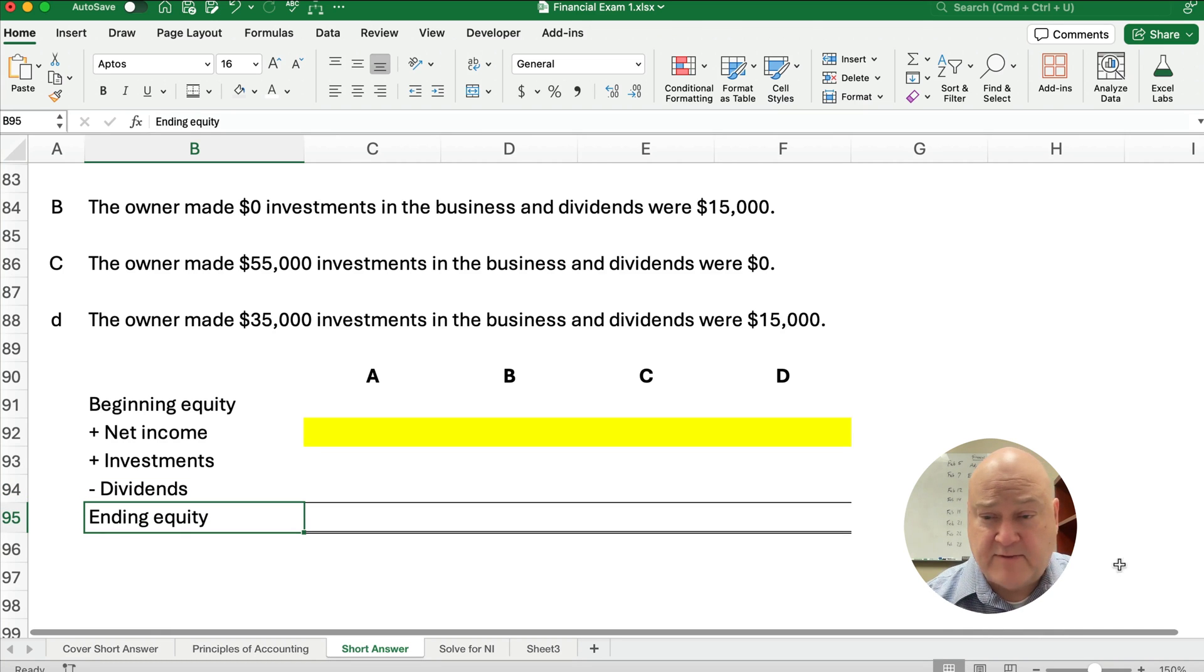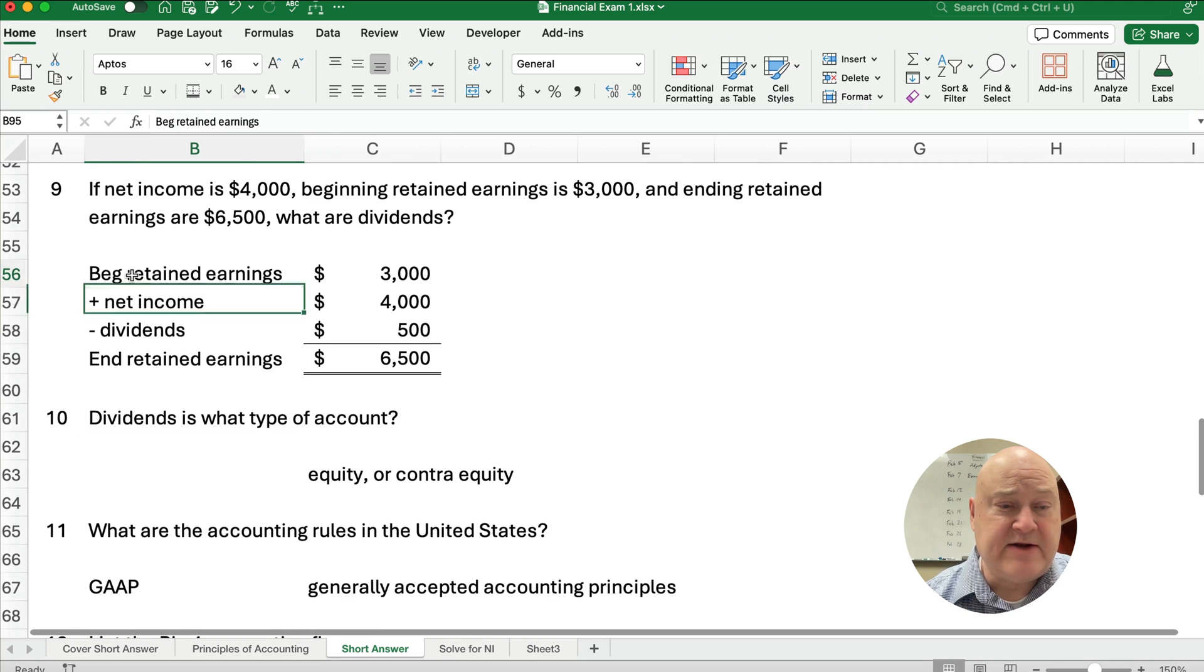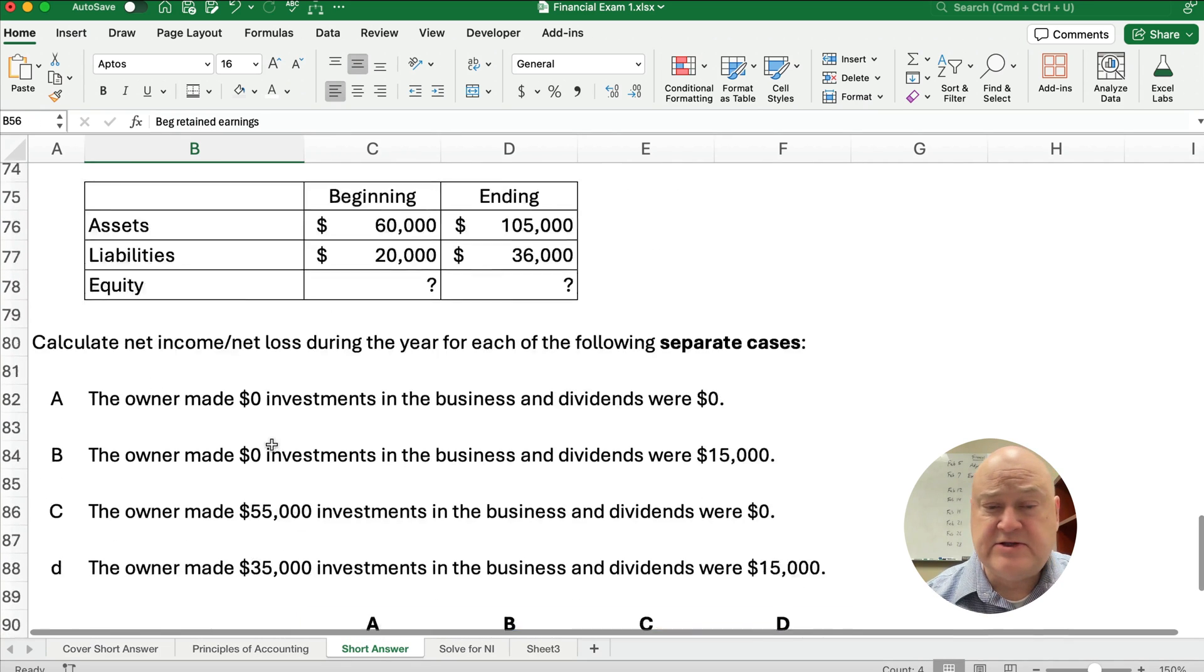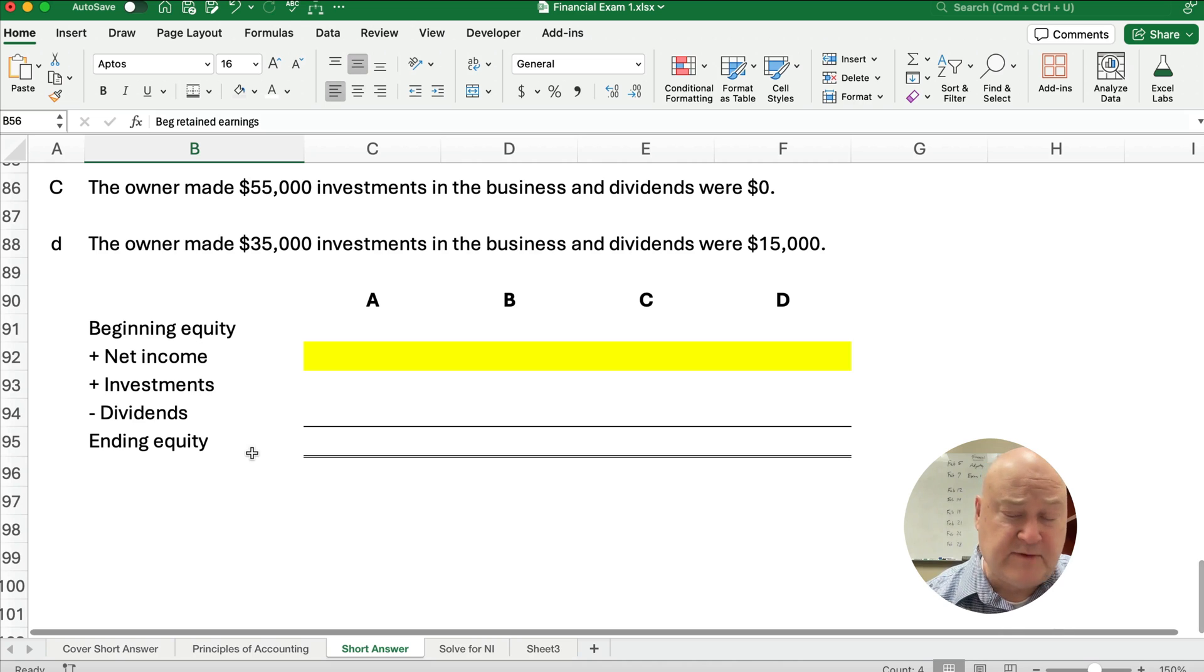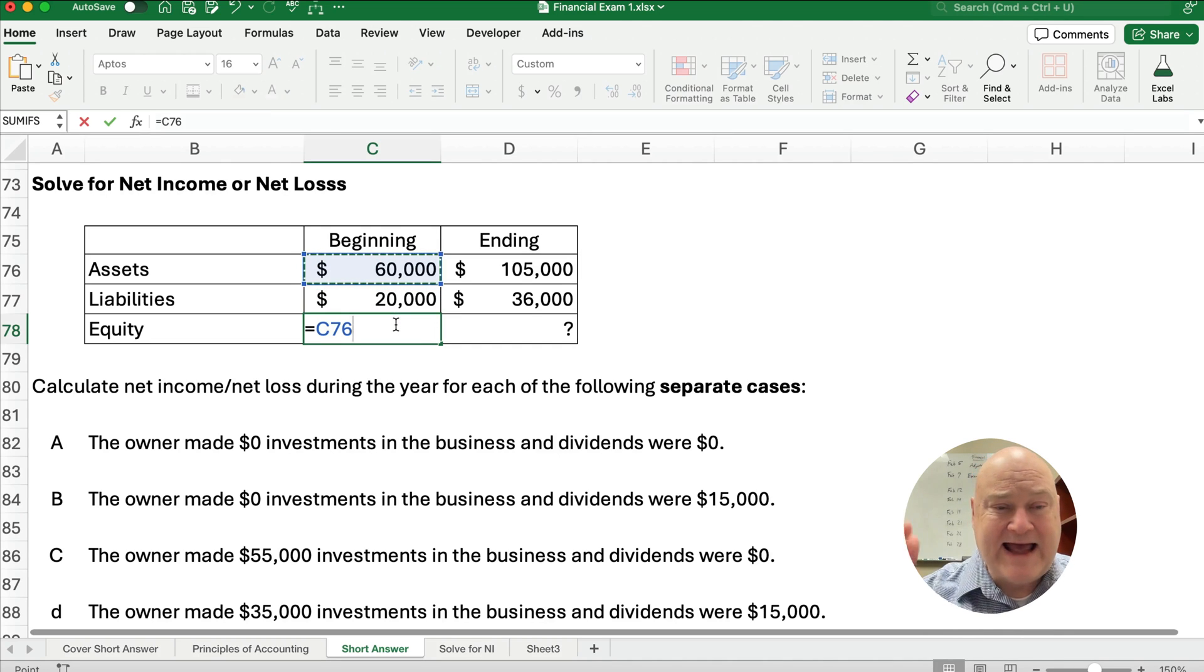We're going to set up beginning equity plus net income plus investments minus dividends gives us ending equity. Now, how is this different from our previous problem? The previous problem had only retained earnings. Now, remember, we could issue some kind of owner investment. So it's more than just retained earnings. It's all of our equity. So we're going to set up and solve for net income each time. So the first thing we need to do is say, what is our ending equity? Instead of giving our beginning and ending equity, we have to calculate that. Well, it's no problem. We know the accounting equation.